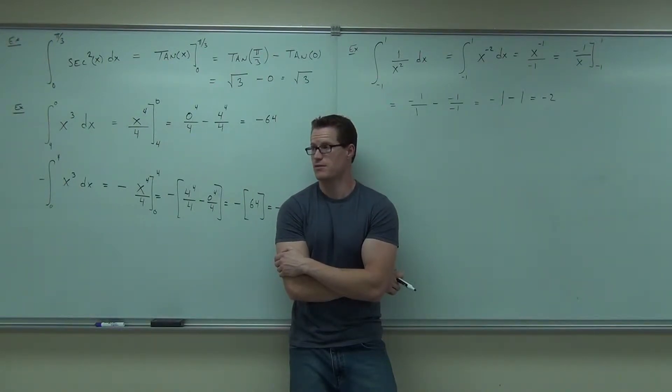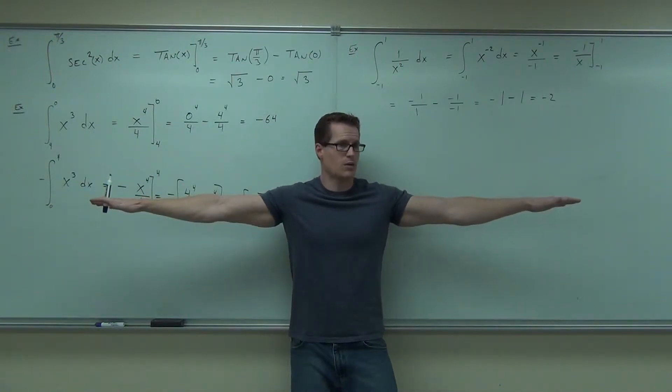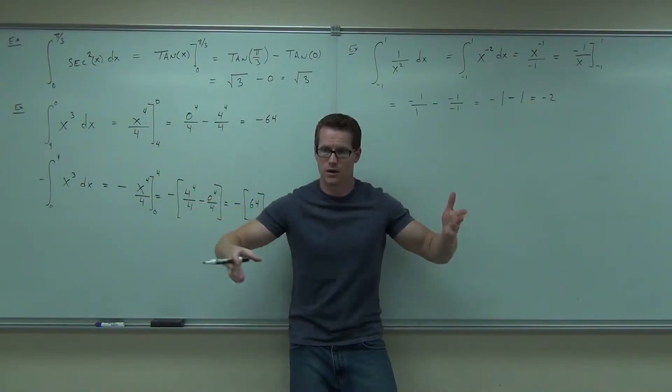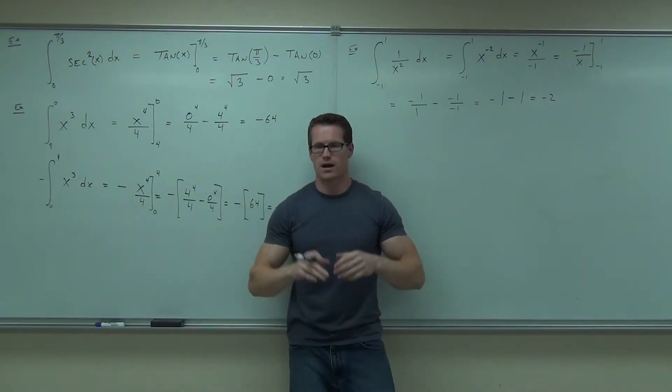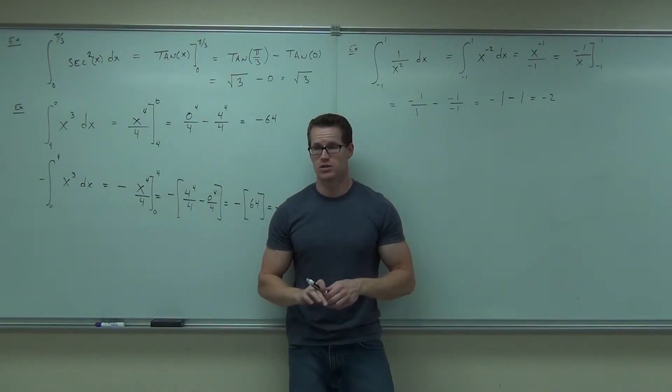Where does it have an asymptote? Okay, it does have those. That's okay though, because I'm between negative one and one. Draw the graph if you have to. You should know the shape of that graph.